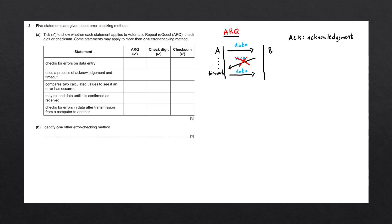There are two main ways ARQ can operate: positive acknowledgement or negative acknowledgement. With positive acknowledgement, when B receives the data and determines it is correct, it sends back a positive acknowledgement, and A receives this before the timeout so data transmission can continue. With negative acknowledgement, if B determines the data is correct, it won't send anything back. If it determines the data is incorrect, it sends back a negative acknowledgement, telling A that it needs to resend the data.